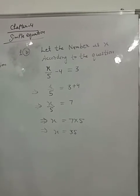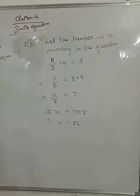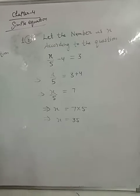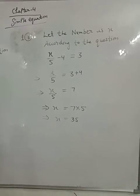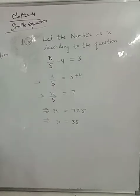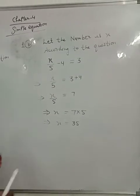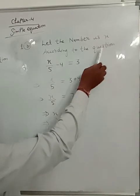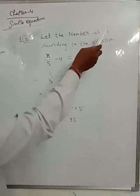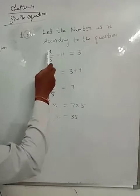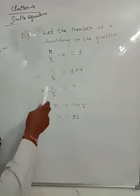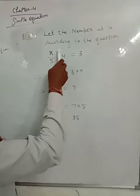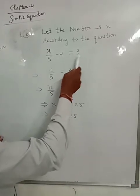Second: one-fifth of a number minus 4 gives 3. If we subtract 4, the result is 3. Let the number be x. According to the question, one-fifth of a number is x upon 5. So x upon 5 minus 4 equals 3.